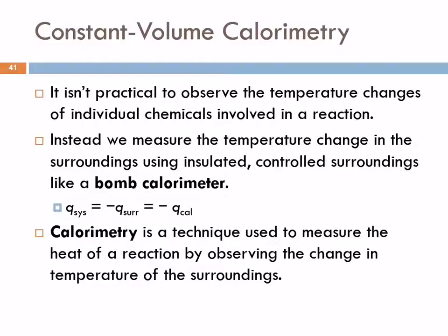We can't really look at the change in the temperature of an individual reaction because it's just very difficult. So what we do is we measure the change in the surroundings. And we can do this using what's called a bomb calorimeter. This is very insulated and very controlled. We've seen this word before because we did an experiment last week with a calorimeter, but that was not this type of calorimeter.